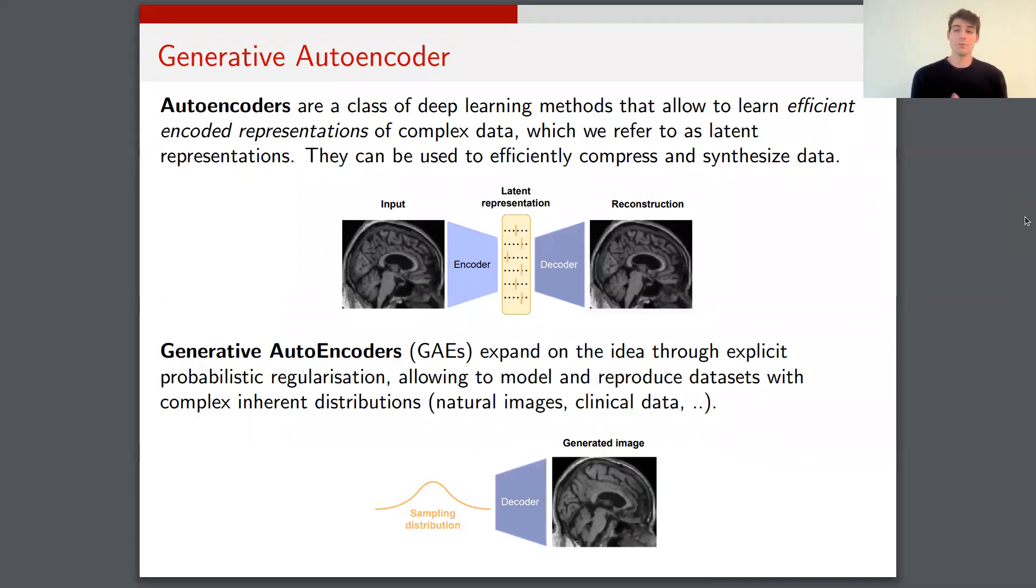Generative autoencoders are basically a subclass of autoencoders, automated generative using a sampling distribution. That sampling distribution can be used either during training, as for the variational autoencoders, or after training, as for the regularized autoencoders.